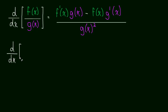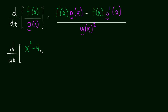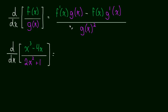So if we want to take the derivative of — let me color code these — x cubed minus 4x divided by 2x squared plus 1. Okay, so this is our quotient. How do we take this derivative? Well, we just use the quotient rule, and hopefully this color coding makes it really easy to see what to do.